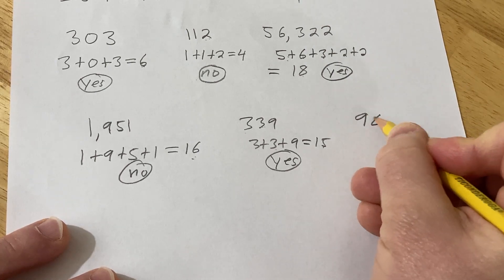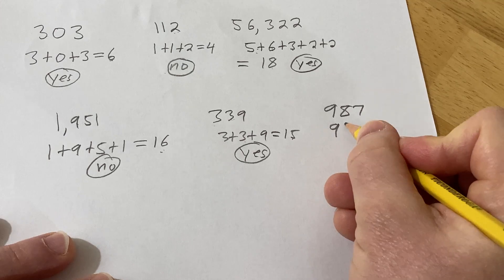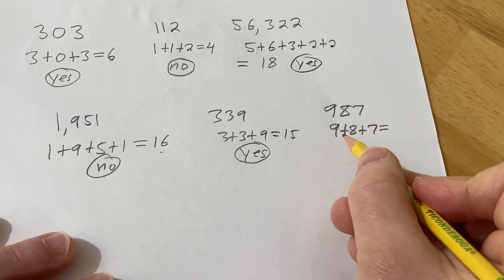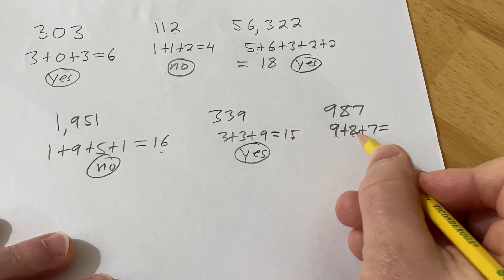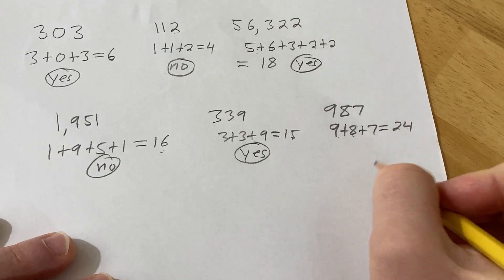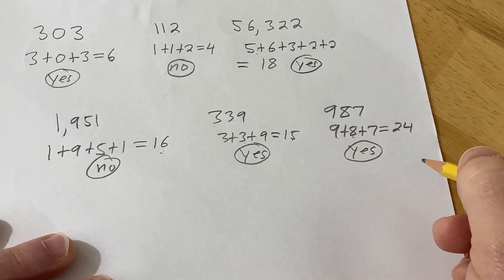And one more. How about 987? In this case, again, we just add the digits. 9 plus 8 plus 7 is equal to, well, let's see. 9 plus 8 is 17. 17 plus 7 is 24. 24 is divisible by 3. So the answer is yes. 987 is divisible by 3.